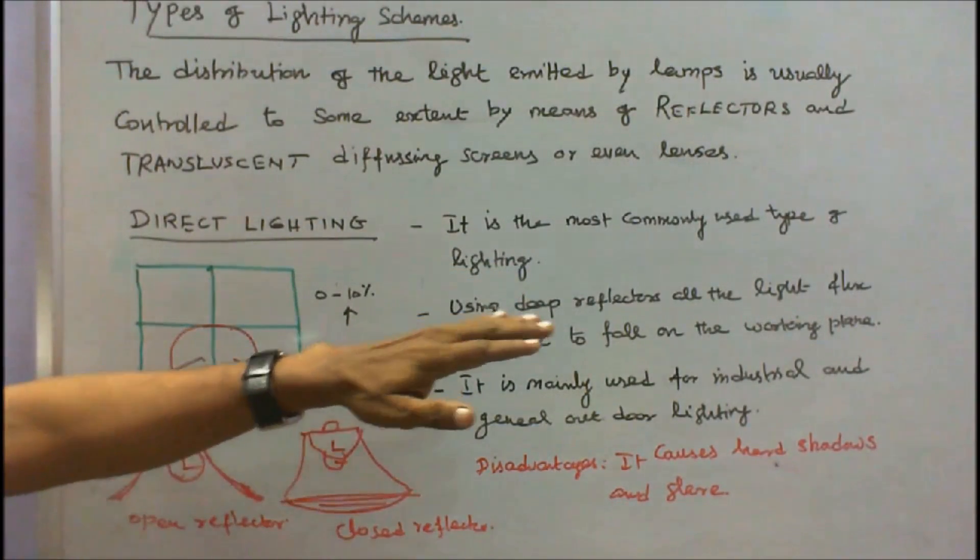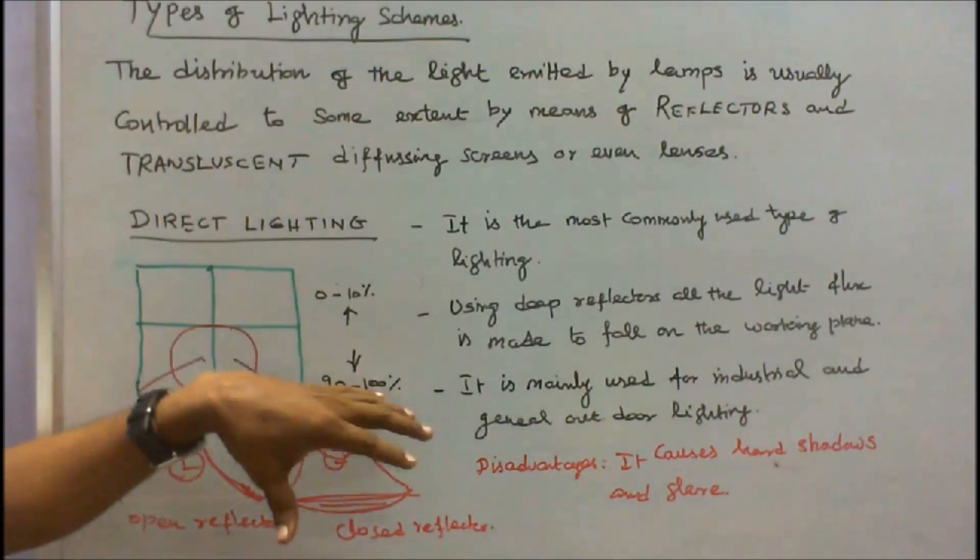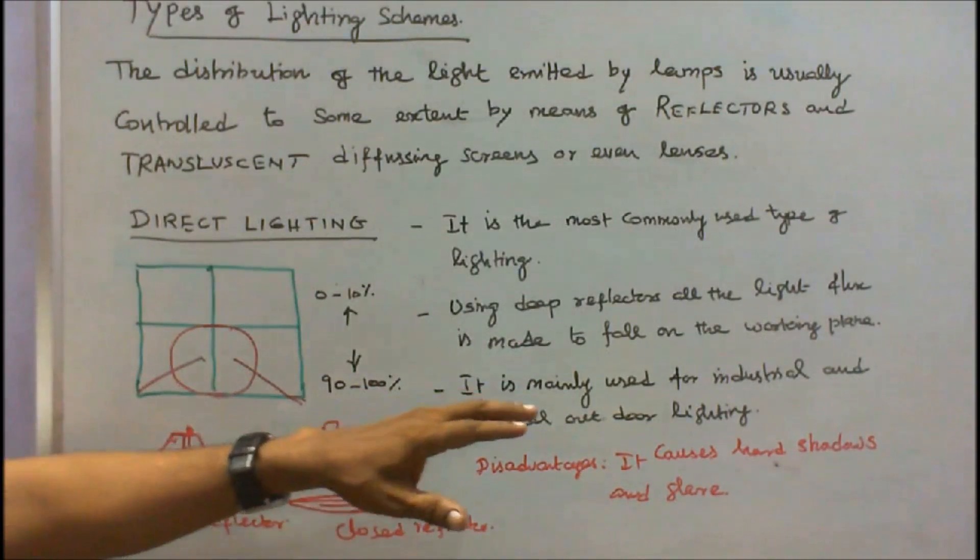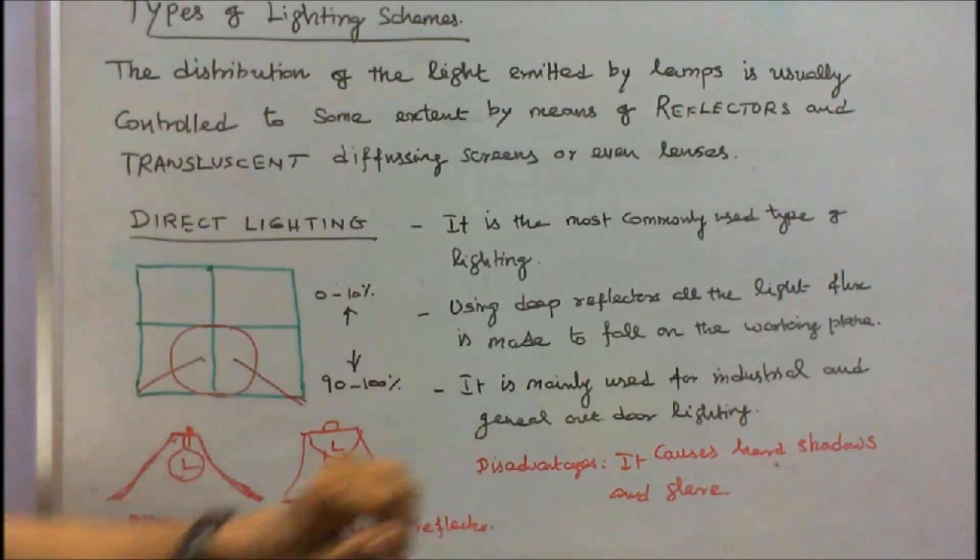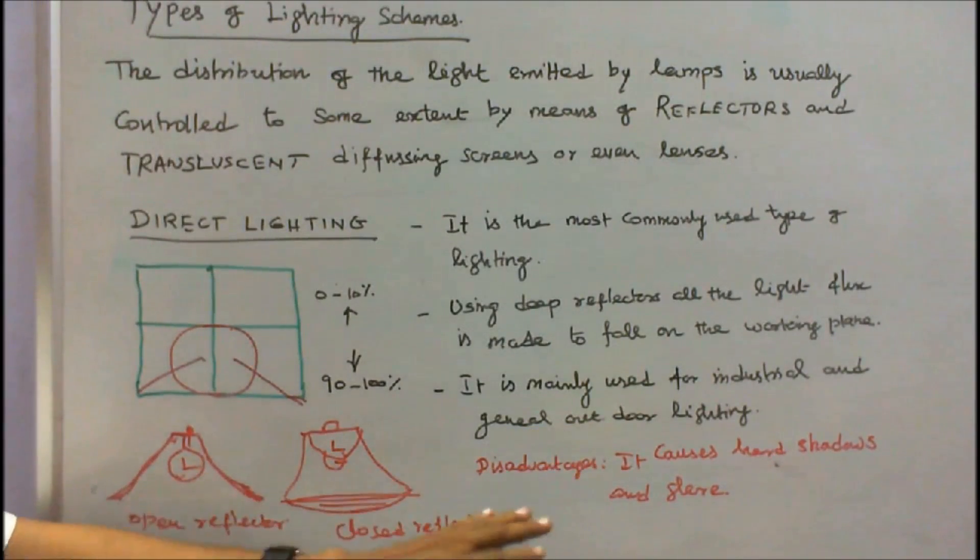Using deep reflectors, all the light flux is made to fall on the working place. It is mainly used for industrial and general outdoor lighting. There are two types of reflectors used. One is the open reflector. Another is the closed reflector. The main disadvantage is it causes hard shadows and glare.